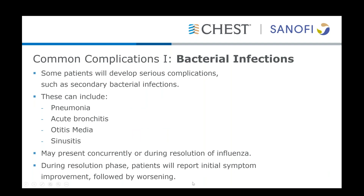Serious complications can occur, and these can commonly be in the form of bacterial superinfections. Some patients will either present concurrently with a bacterial infection or will develop a bacterial superinfection during the resolution phase of their influenza illness. Most commonly, these include infections of the upper and lower respiratory tracts, including pneumonia, acute bronchitis, otitis media, and sinusitis. Classically, patients who develop this during the resolution phase will report feeling better for several days, followed by a period of feeling worse, which is concerning for a secondary infection.